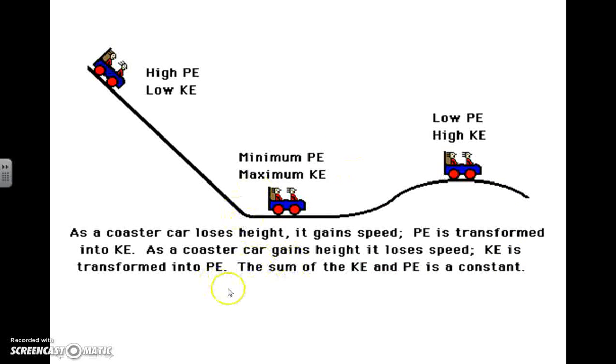I also have a roller coaster car here with some labels on it, I think is worth looking at. We have a roller coaster car descending downhill here where we have a high potential energy, a high gravitational potential due to that high height, but a low kinetic energy due to its relatively low speed at this point.